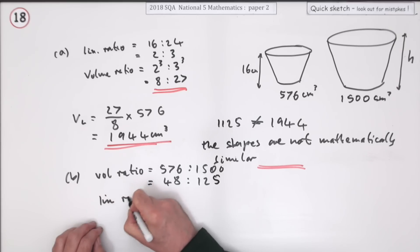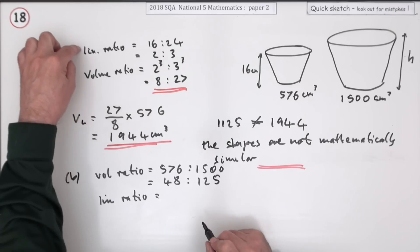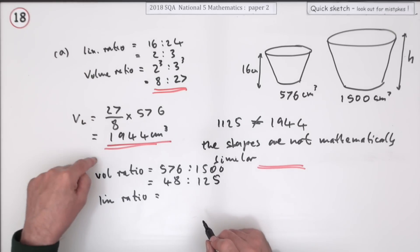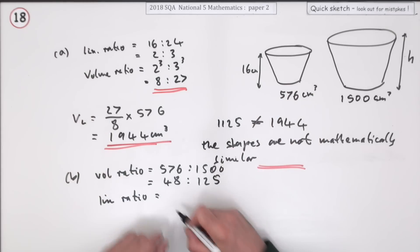Which means the linear ratio—this time I'm going backwards—if I knew the linear ratio I cubed them, so if I know the volume ratio I'll have to uncube them. It'll be the cube root of those: cube root of 48, but it wasn't 27, now that's 5.